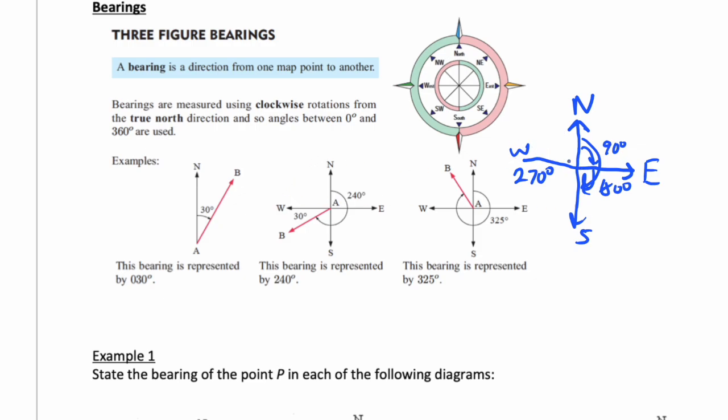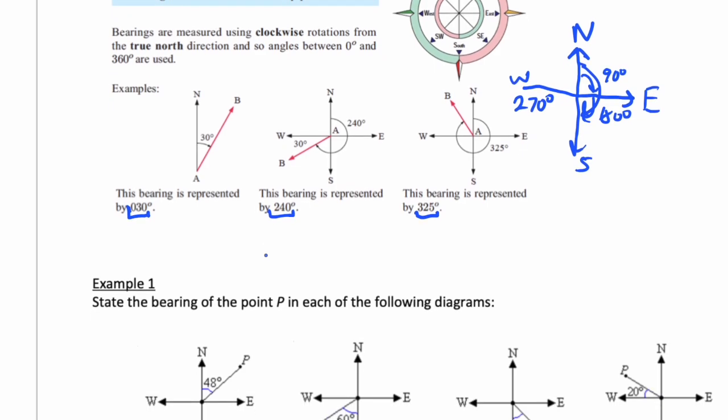If you go all the way to west, the bearing is 270. Beyond that, it's like 280, 290, all the way up to - you wouldn't go to 360, that would be back to zero degrees. Bearings are always three-digit numbers, like 030, 240, 325 - always three digits.